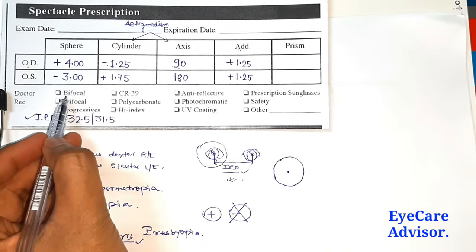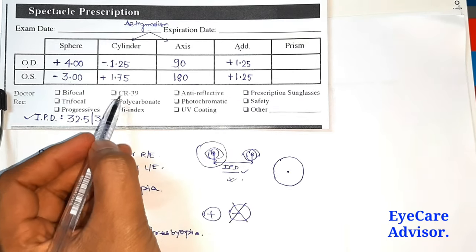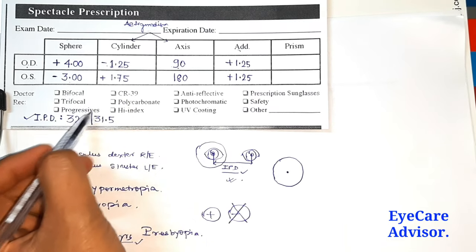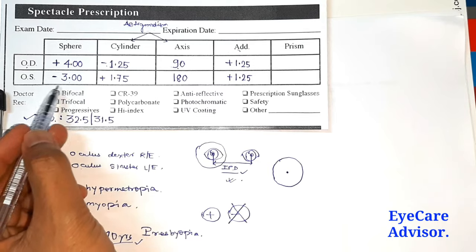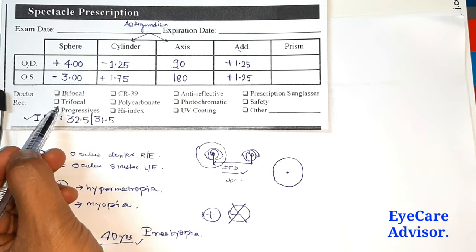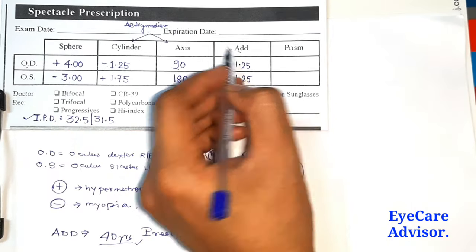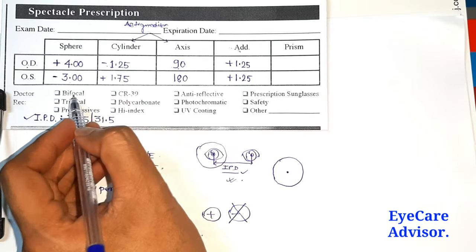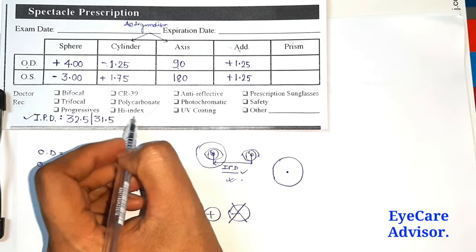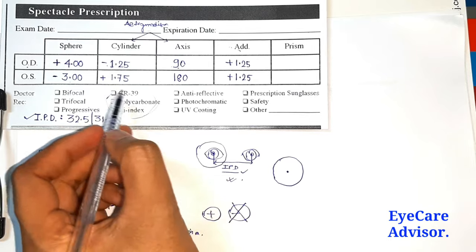You can see here some other options: bifocal, trifocal, progressive. These are the types of glasses given above the age of 40 years for those who are having add. This part is related with the add. Then this is the type of lenses, the lens material.